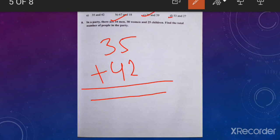Now, number eight. It is a problem sum. So first read the sum. In a party, there are thirty-four men, thirty-eight women, and twenty-five children. Find the total number of people in the party.